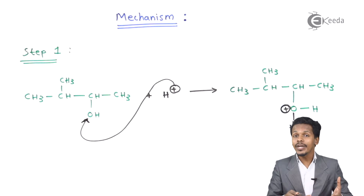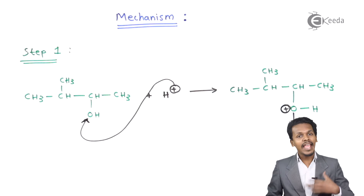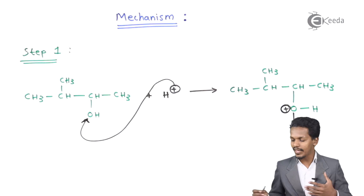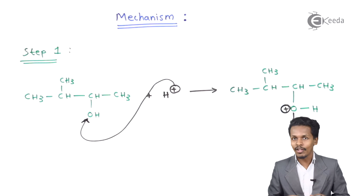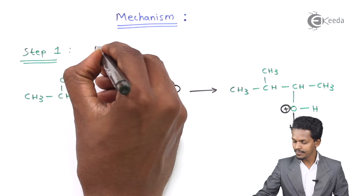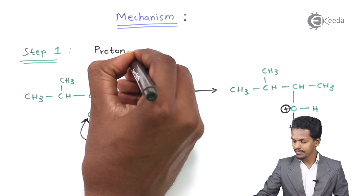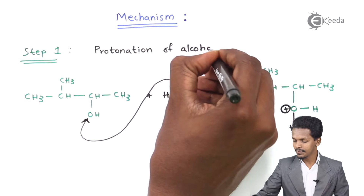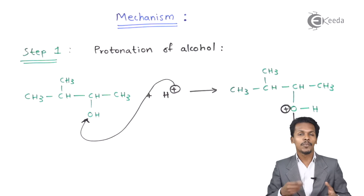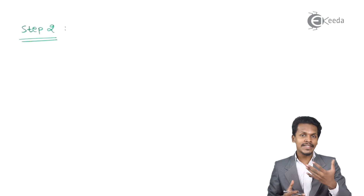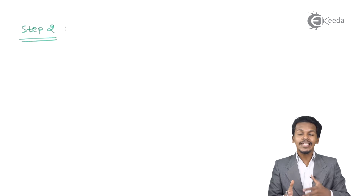We have protonated the alcohol, and there is a particular name for this step. In step 1 we have converted an alcohol into a protonated alcohol. Therefore the name of step 1 is: protonation of alcohol.